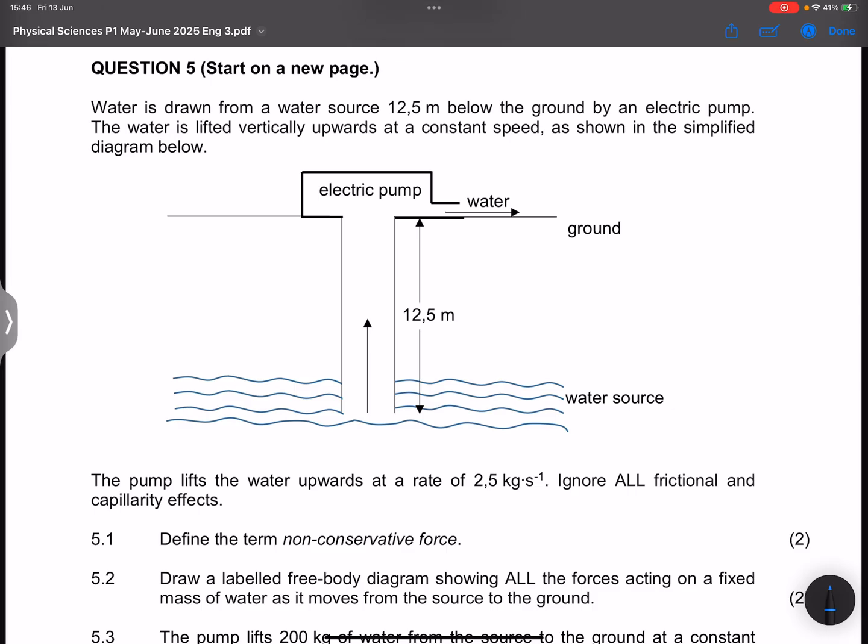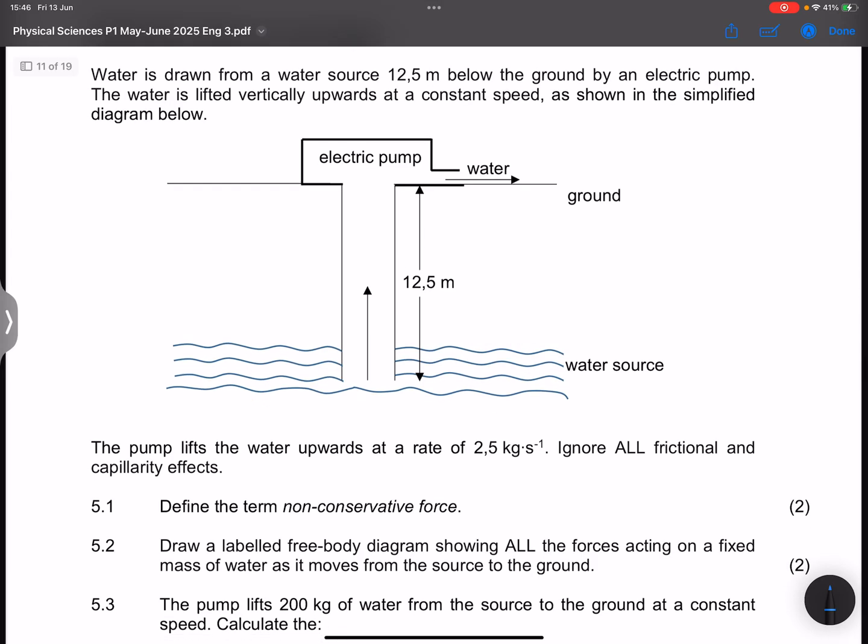And so we move on to question five. They say to us water is drawn from a water source 12.5 meters below the ground by an electric pump. The water is lifted vertically upwards at a constant speed.